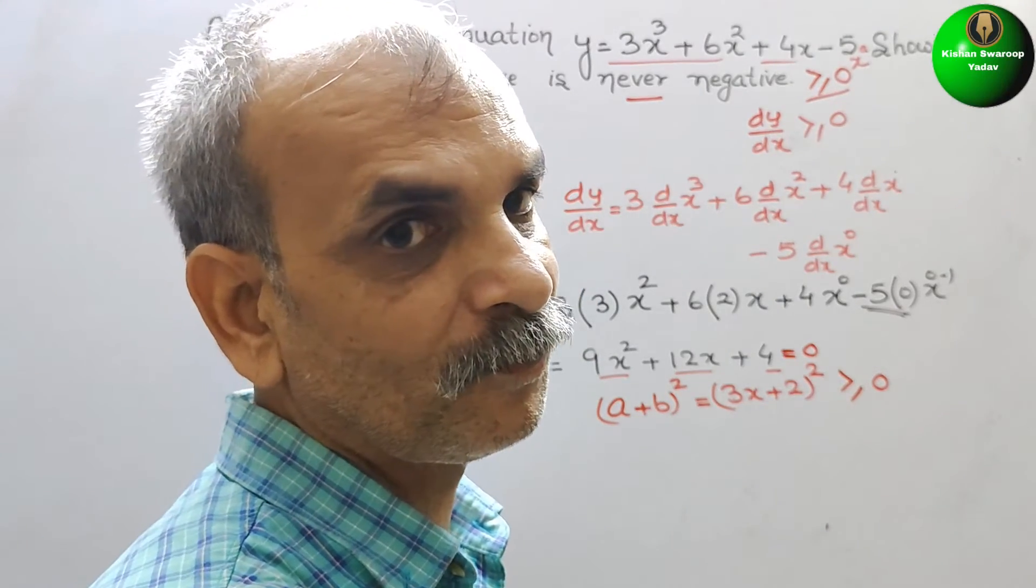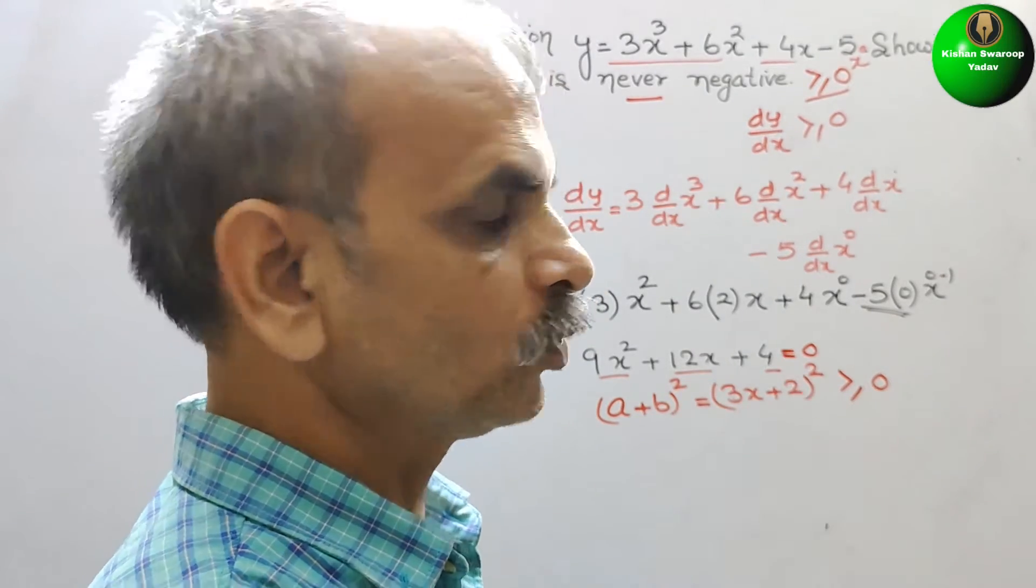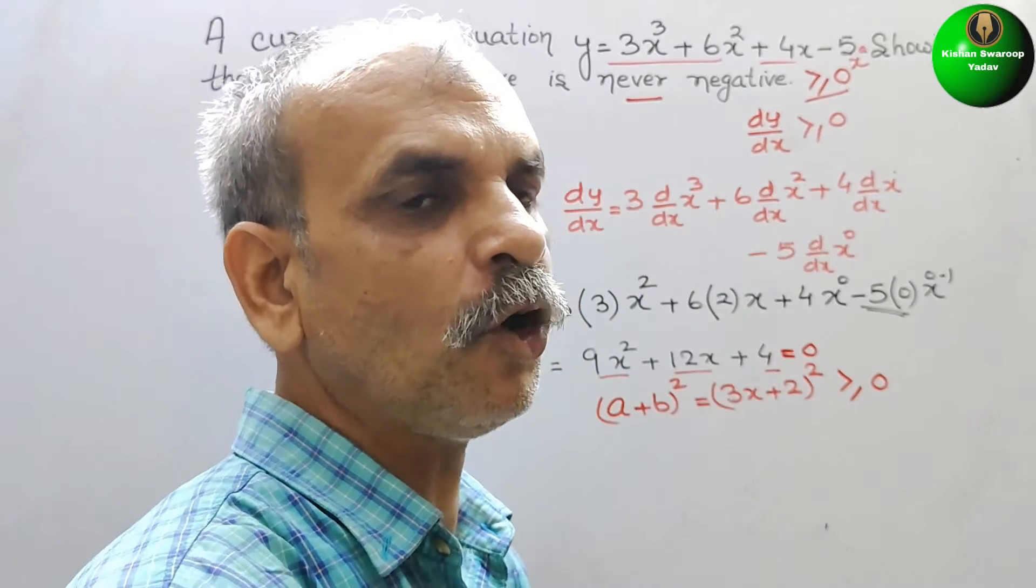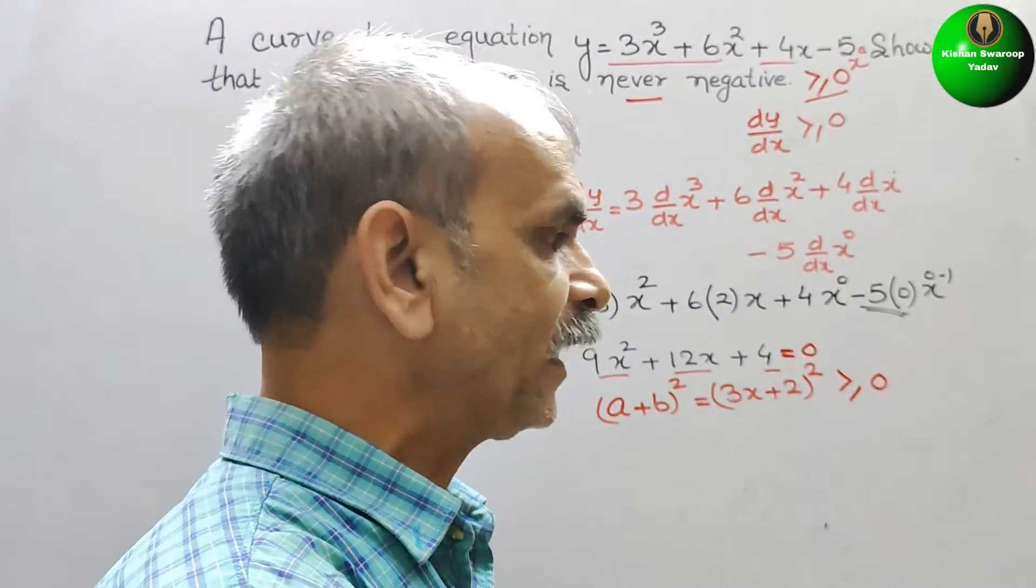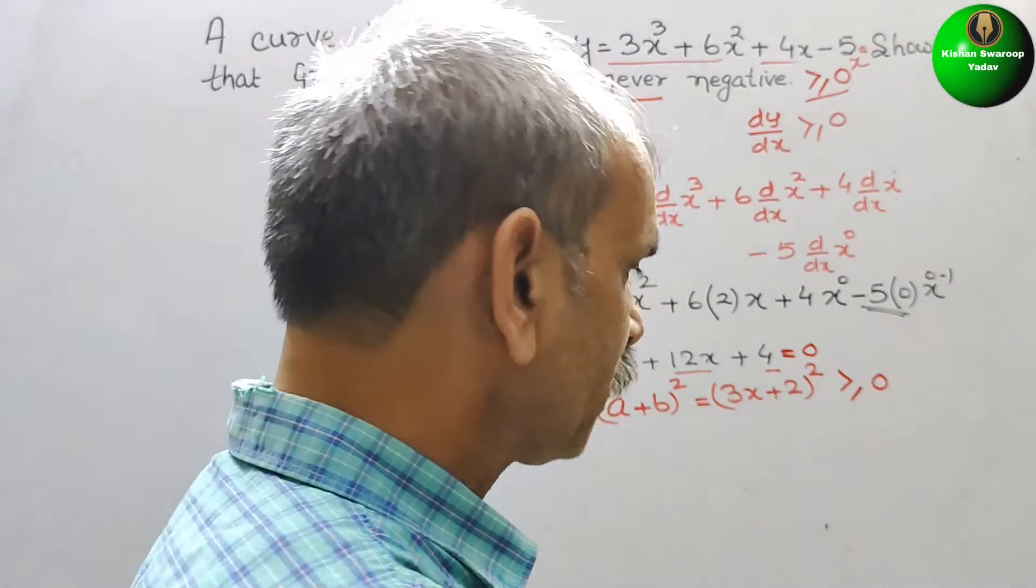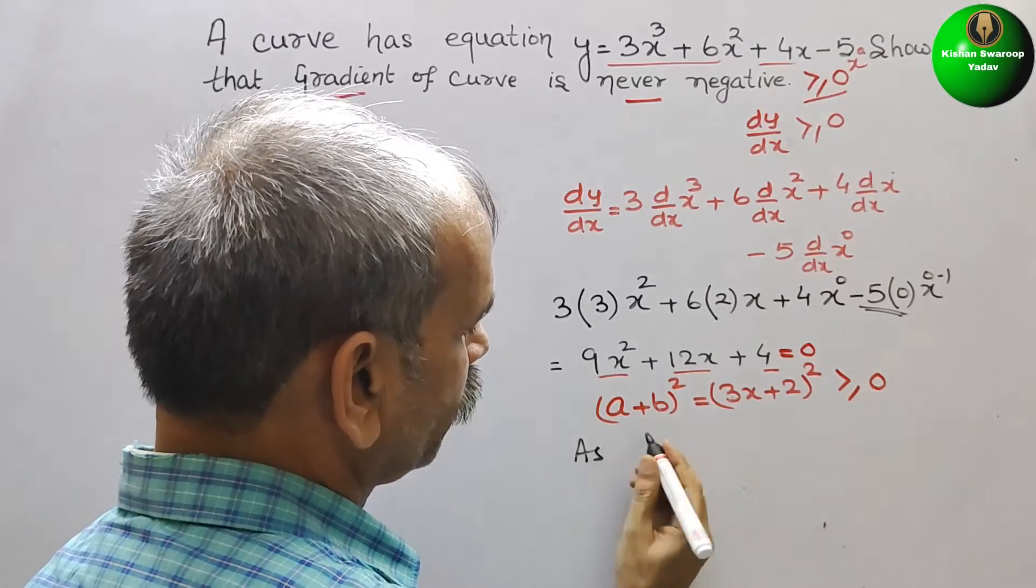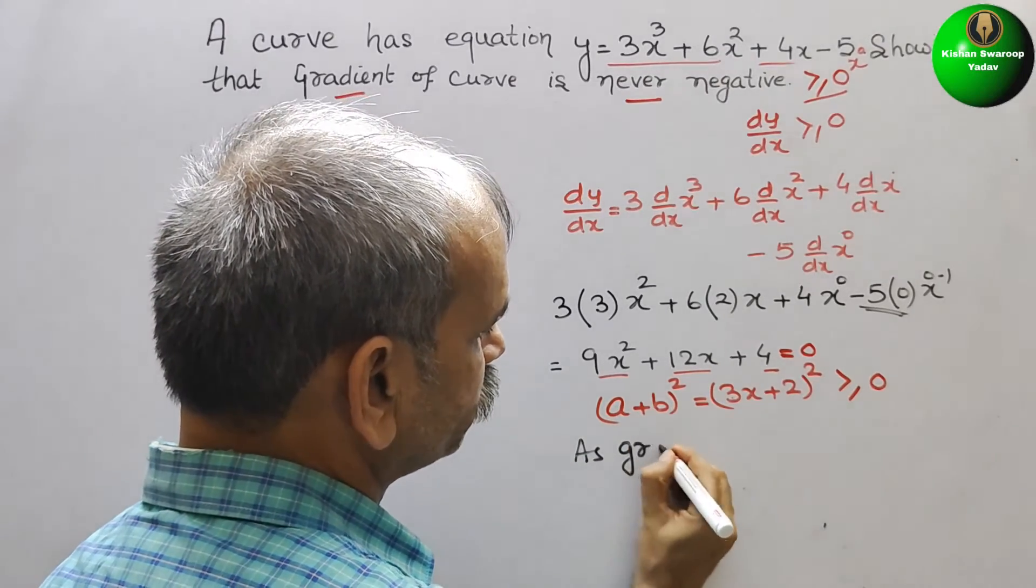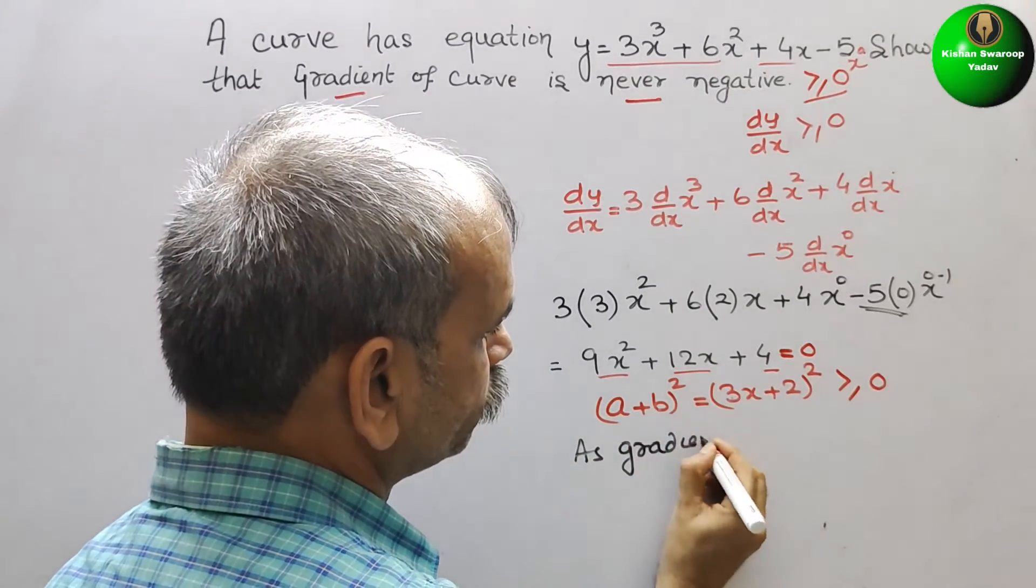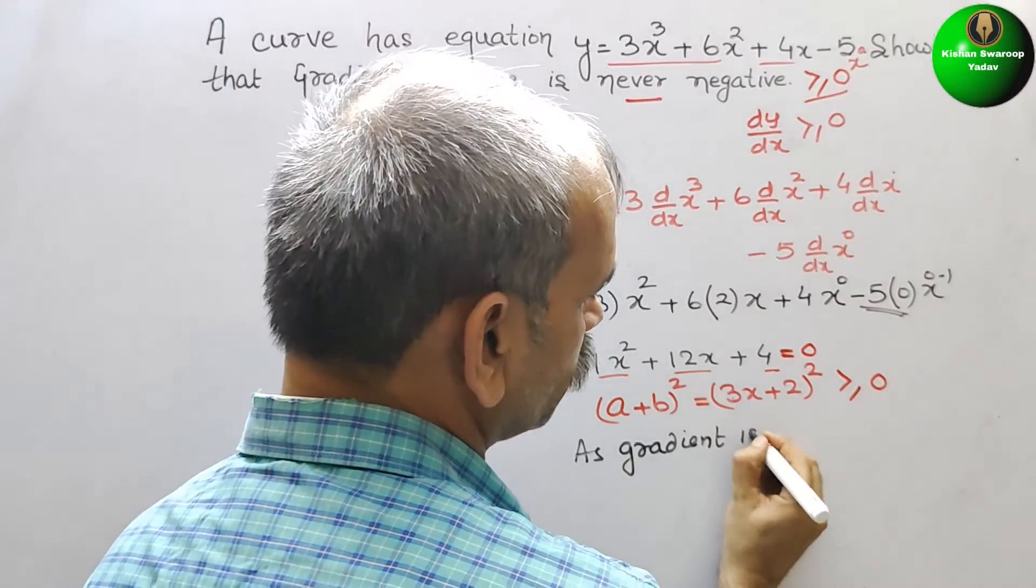x is the square, 3x + 2. If we put any value of x, we will get positive. So here we will write: gradient is square.